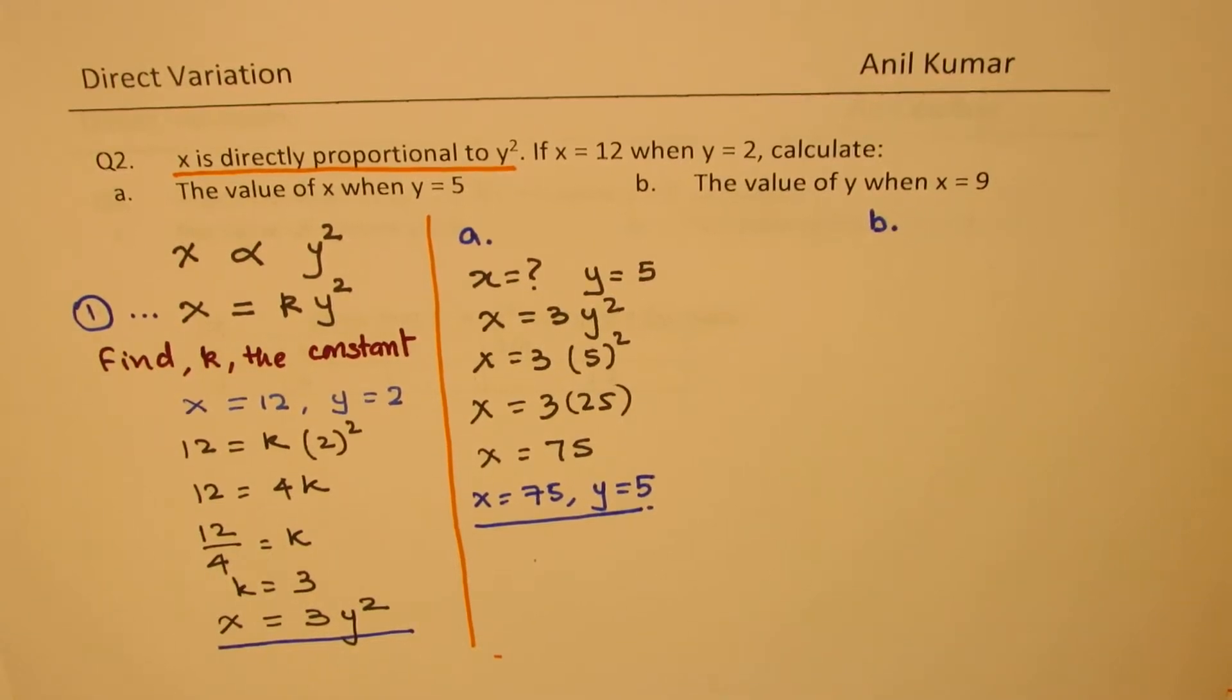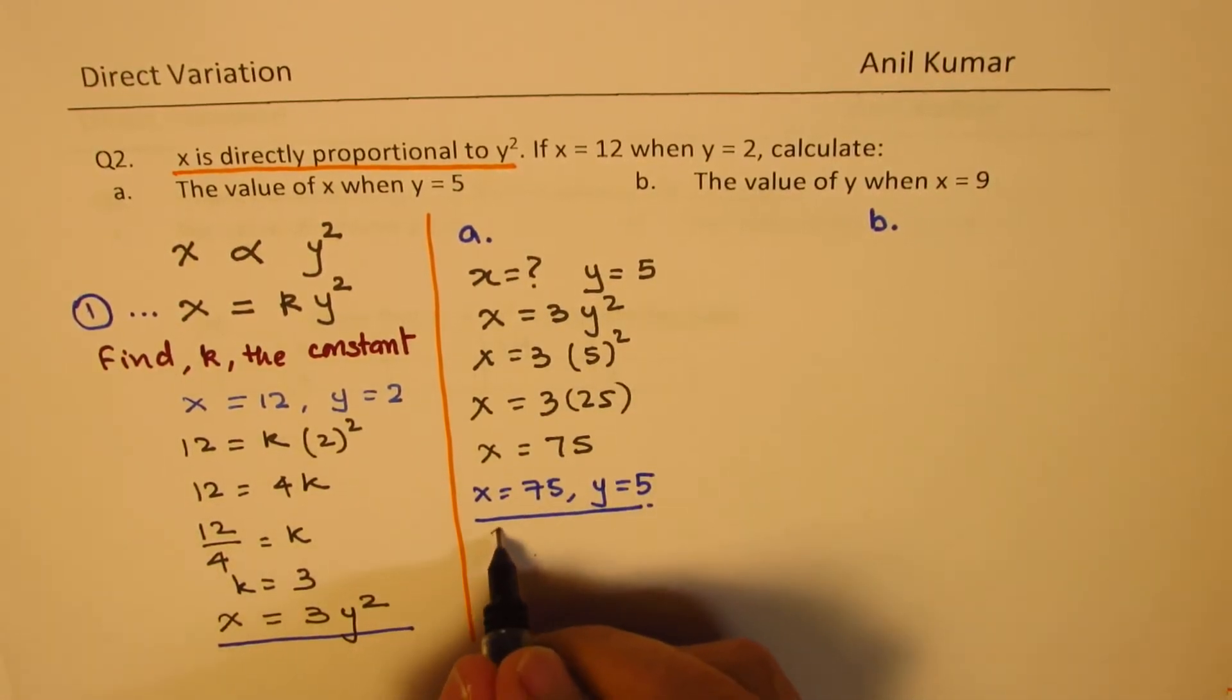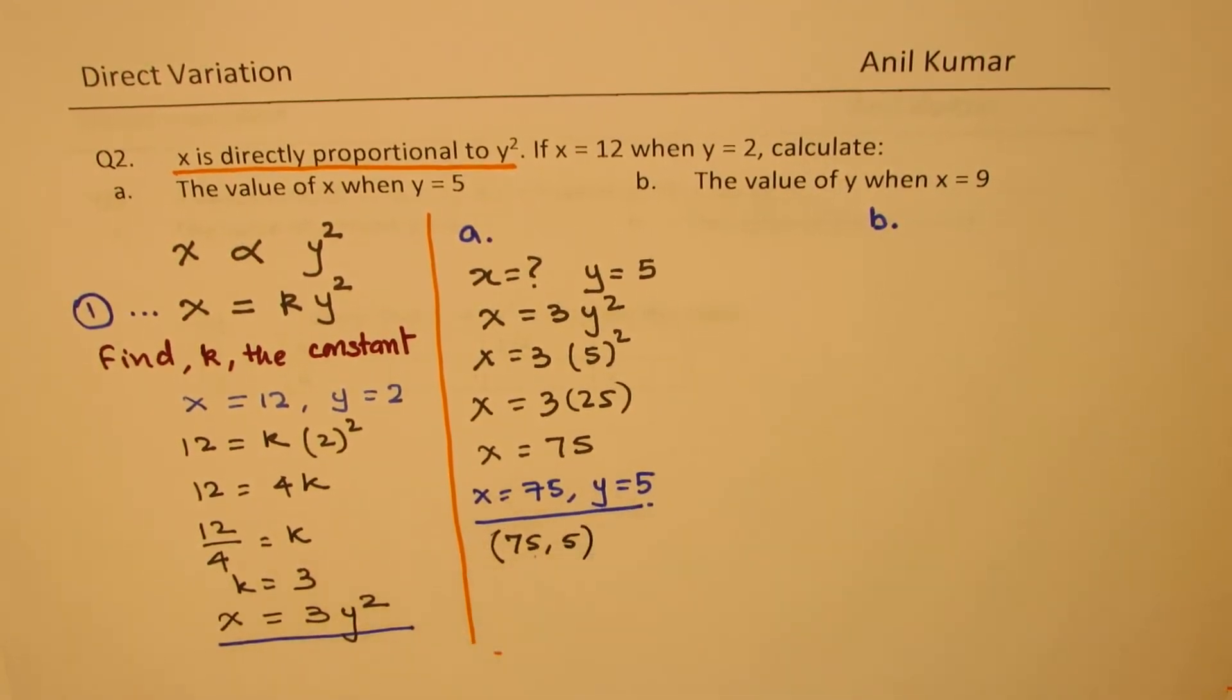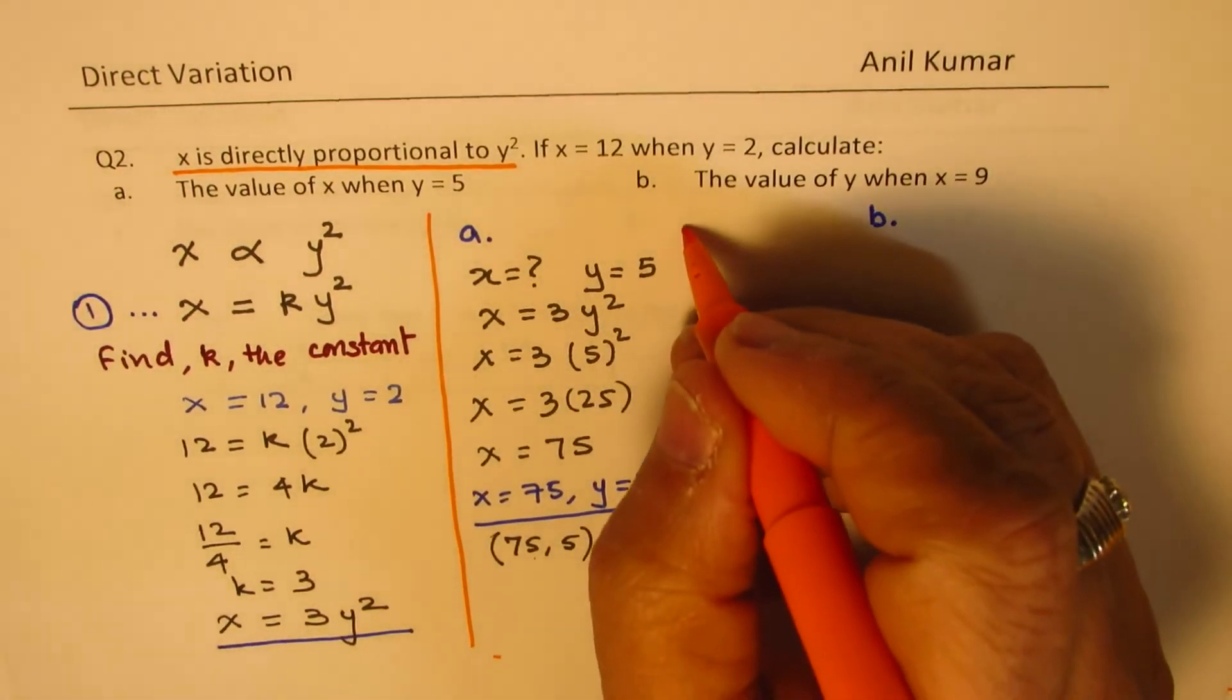At times we may write this as a coordinate point. So in some parts of the world we may write like this as our solution to the given question. Now let's look into part b.